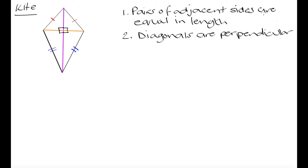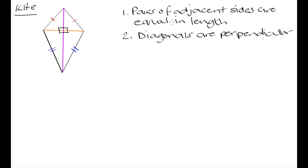These are the two properties that describe the kite family. If we only need to satisfy these two criteria to make something part of the kite family, then the rhombus and the square can also be thought of as shapes belonging to the kite family, as well as the parallelogram family. That's because both the rhombus and the square have all sides of equal length, so of course their adjacent sides will be equal.